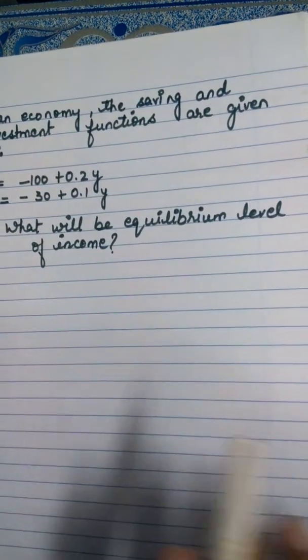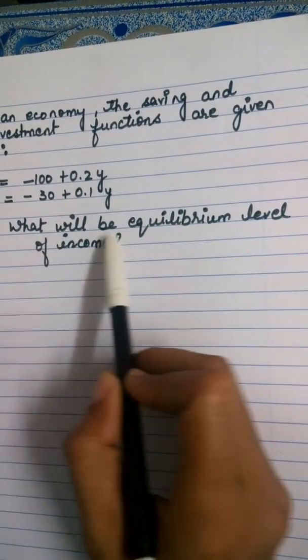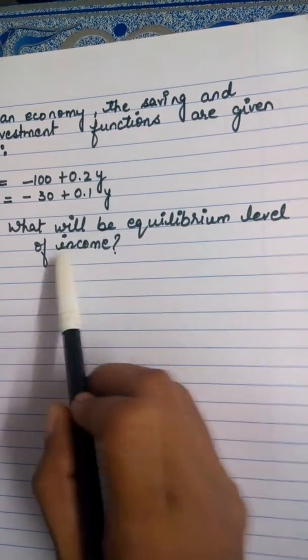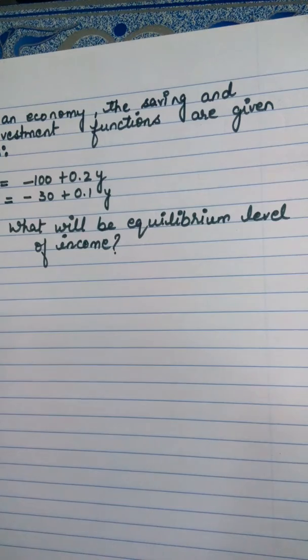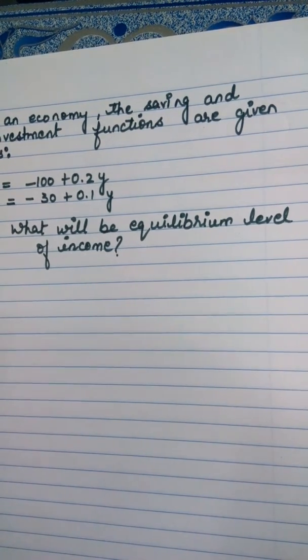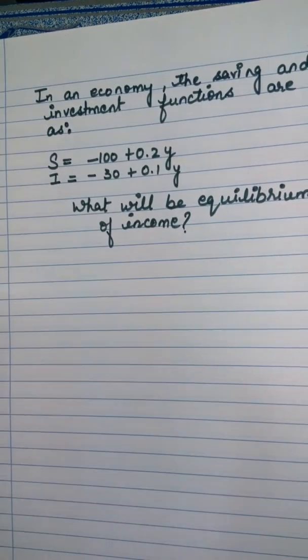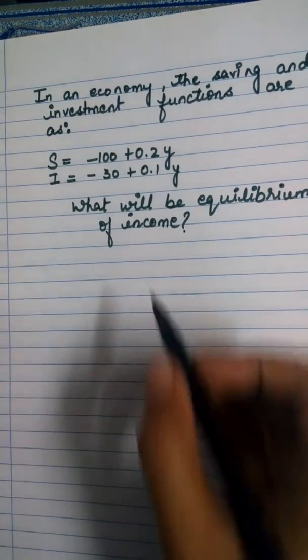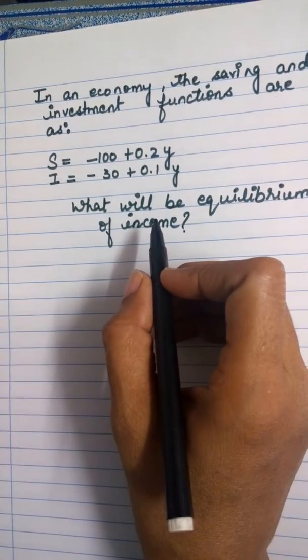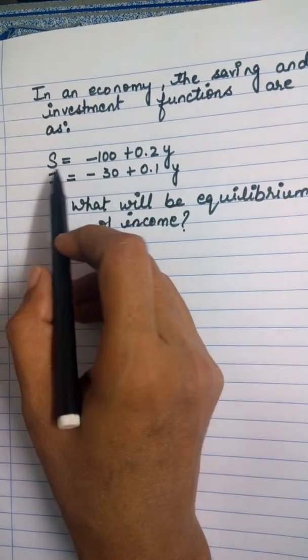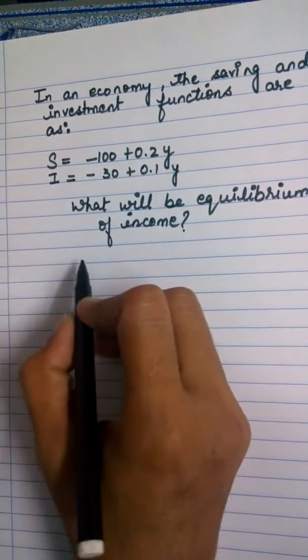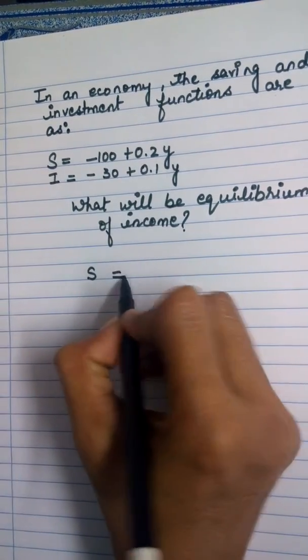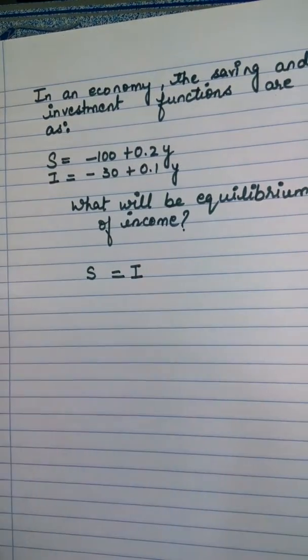The question is asking what will be the equilibrium level of income. So if we want to find out the equilibrium level of income, first we should know the equilibrium point. The equilibrium point will be where saving equals investment. So first of all, we will write saving equals investment.